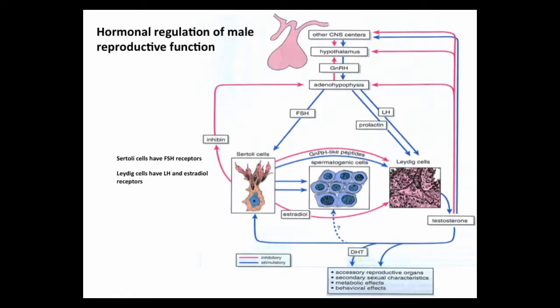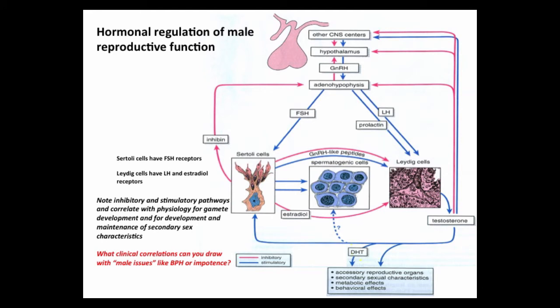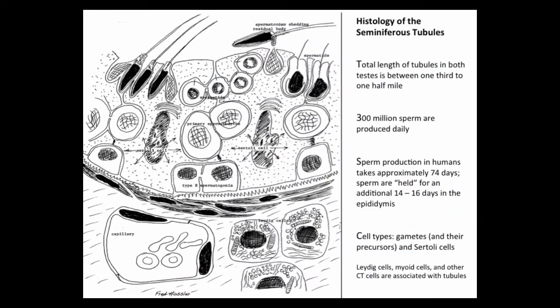This diagram gives an overview of hormonal regulation of the male reproductive system, which will be covered in detail in physiology. Understand that Sertoli cells have FSH receptors, Leydig cells have LH and estradiol receptors. Note the inhibitory and stimulatory pathways and correlate with physiology for gamete development and maintenance of secondary sex characteristics. Here is a diagram of the histology of the seminiferous tubules.